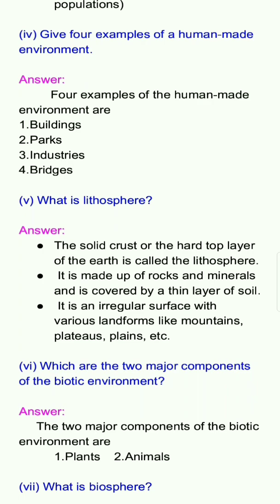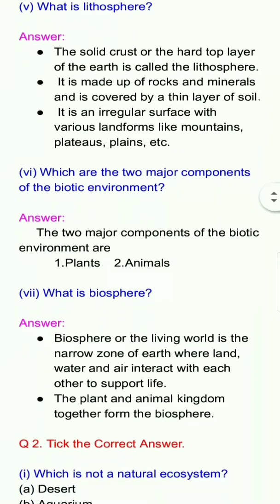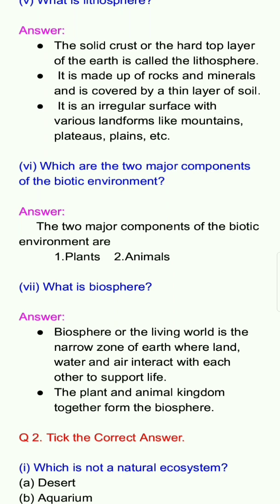Sixth question: What are the two major components of the biotic environment? Answer: The two major components of the biotic environment are 1. Plants, 2. Animals. Seventh question: What is biosphere? Answer: Biosphere, or the living world, is the narrow zone of earth where land, water and air interact with each other to support life. The plant and animal kingdom together form the biosphere.